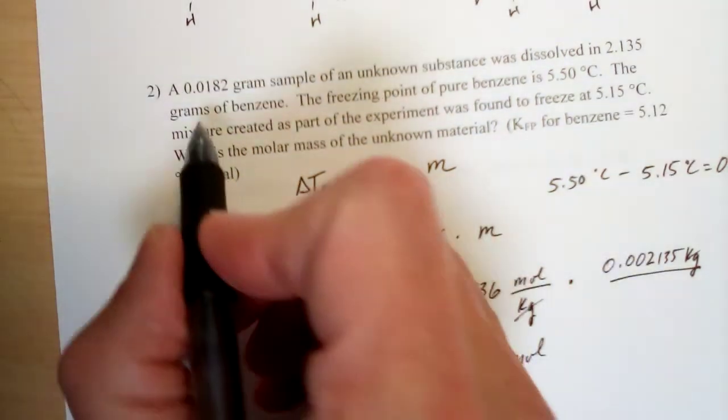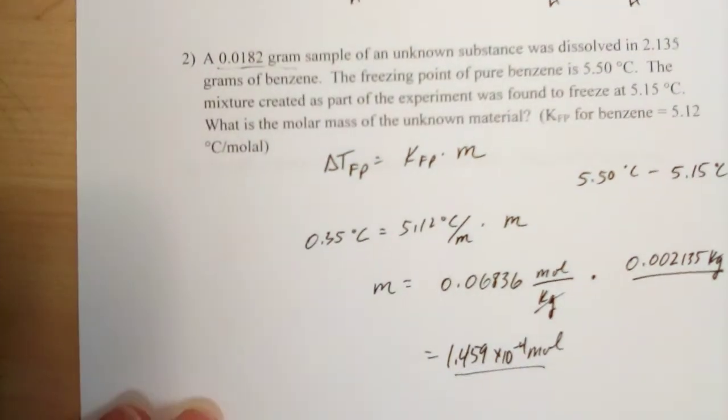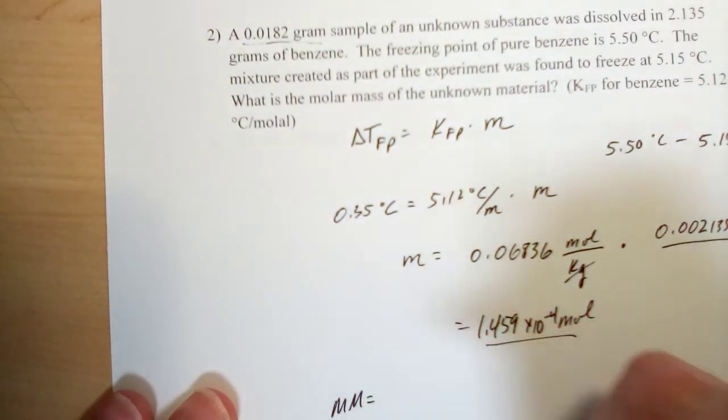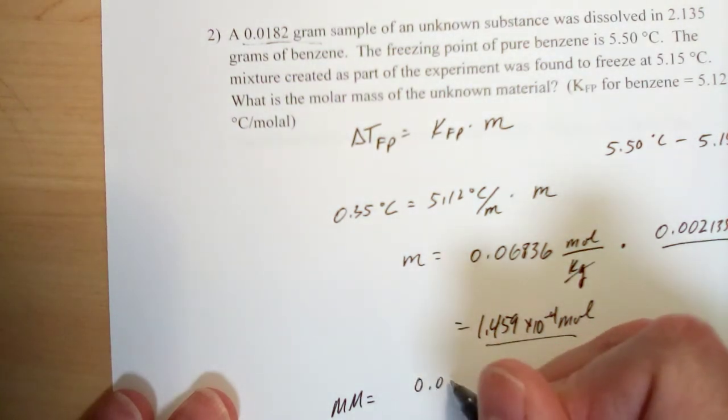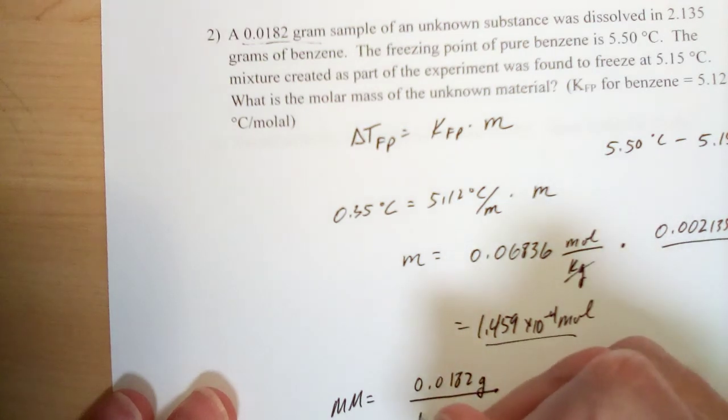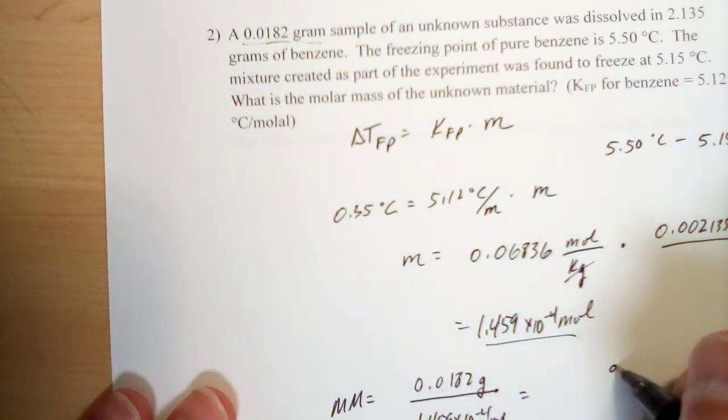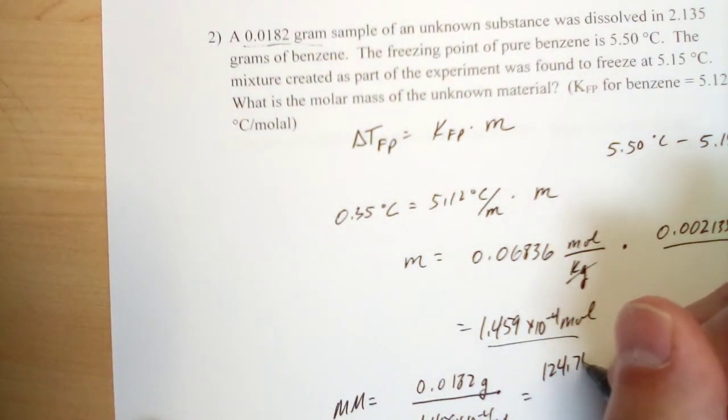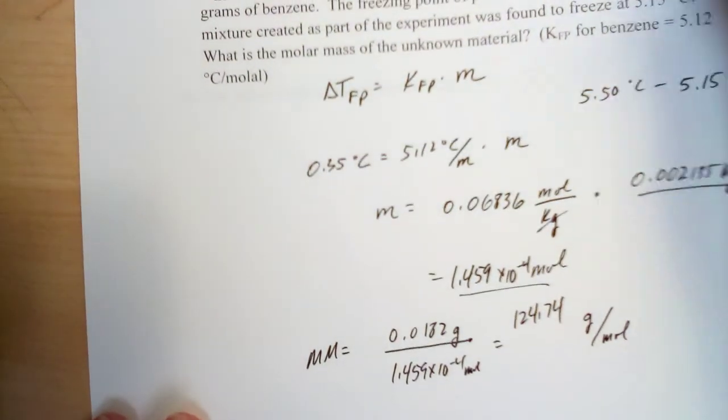Now we're almost done here. We now know how many moles were in our unknown. Since we weighed out the sample to make this sample to compare the boiling points, we know how many grams are in our unknown. Molar mass, of course, is grams per mole. So if I take 0.0182 grams of the compound, divide by 1.459 times 10 to the minus fourth moles, that gives me the correct units to describe molar mass—grams per mole. And that comes out to be 0.0182 divided by 1.459 times 10 to the minus fourth, comes out to 124.74 grams per mole.